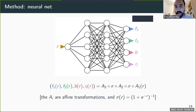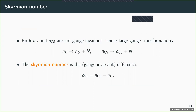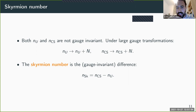Question from audience: So you are setting things up such that you rotate away any possible winding in the U field and put everything into the W field, and then computing the Chern-Simons number from that? Speaker: Exactly. There are two different versions of the Skyrmion number: one based on N_U, which is gauge variant but conserved, and the version shown here based on N_CS, which is conserved but not gauge invariant under all transformations.